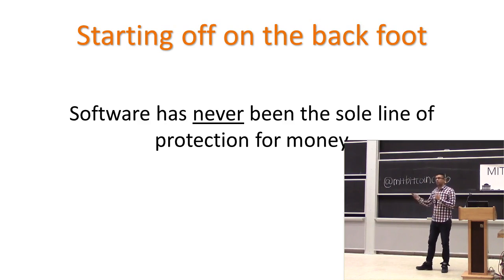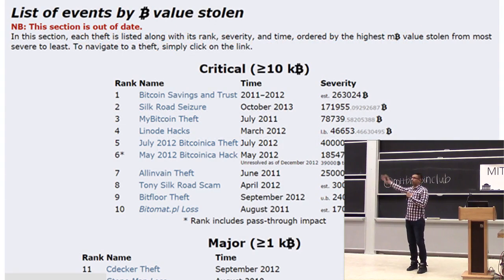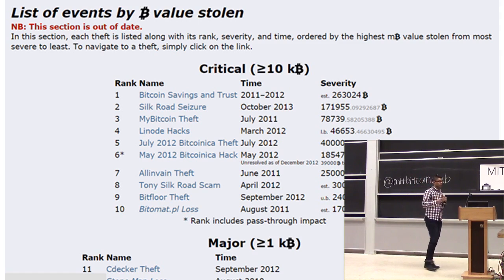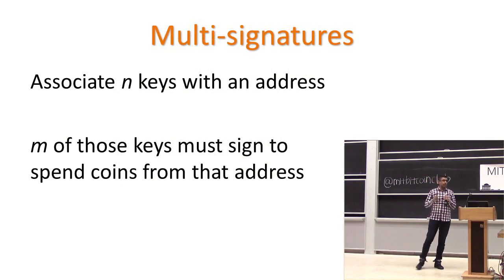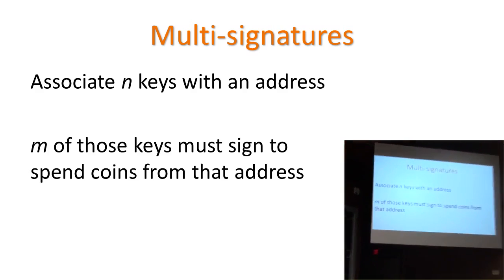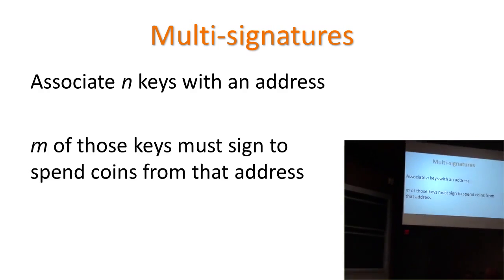Multi-signatures — this was brought up a lot in the panel yesterday as well. The idea is really simple: you associate N different keys with an address and stipulate that at least M of those keys must sign in order to spend Bitcoins from that address. Really simple concept. It's sort of like splitting your keys, but not quite — I'll get to that in a second.